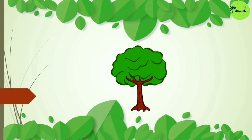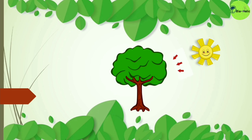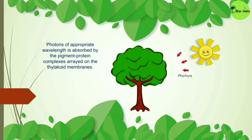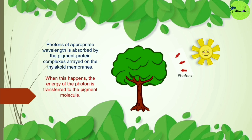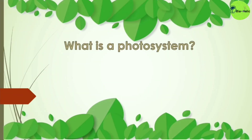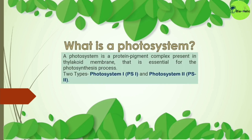When plants are exposed to sunlight, the light energy from the sun reaches the plant as photons. Photons of appropriate wavelengths are absorbed by specific pigment-protein complexes located on the thylakoid membranes of the leaves, and the energy of the photon is transferred to the pigment molecule. The photosystem is this protein-pigment complex, present in the thylakoid membrane, and it is essential for the photosynthetic process.